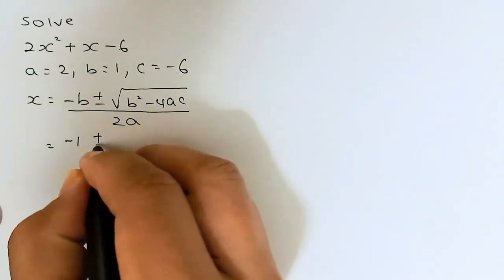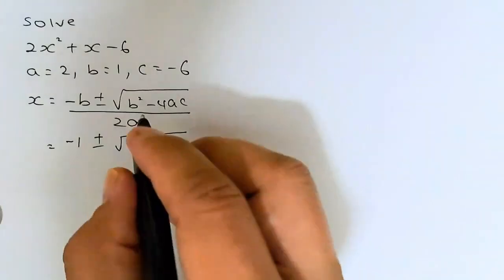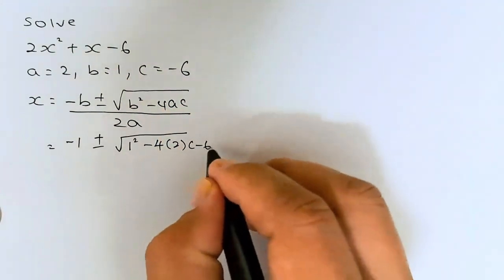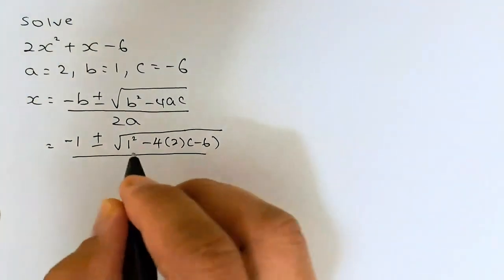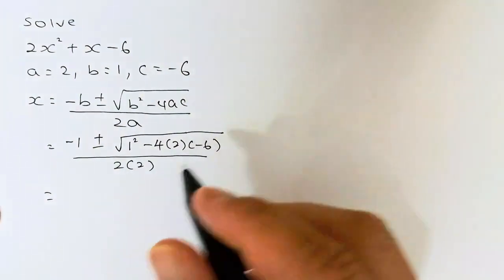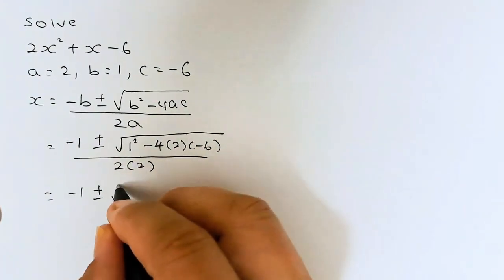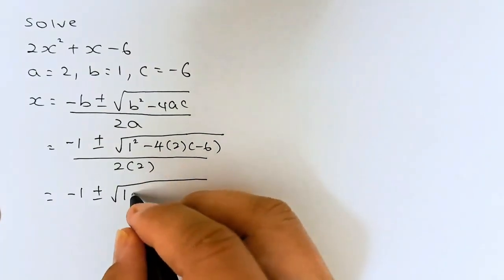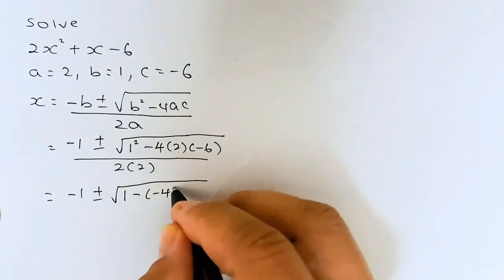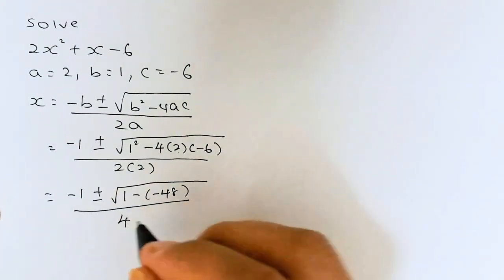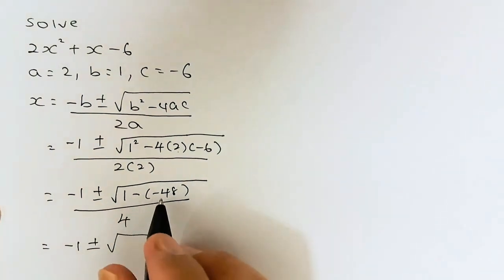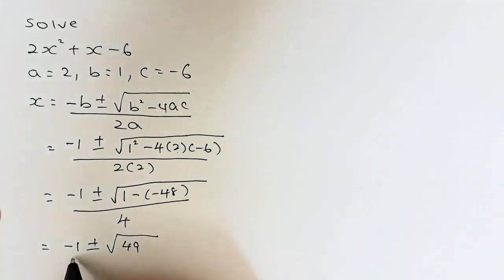So minus b gives minus 1, plus or minus the square root of b squared, which is 1 squared, minus 4 times a, which is 2, times c, which is negative 6, all divided by 2a, which is 2 times 2 equals 4. Simplifying inside the square root: 1 squared is 1, minus 4 times 2 is 8, and 8 times minus 6 is negative 48, so we have 1 minus negative 48, which gives 49, all over 4.